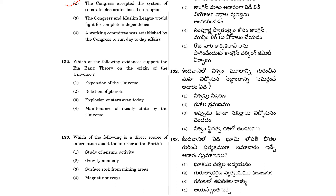Question 132: Which of the following evidences support the Big Bang Theory on the origin of the universe? The answer is the expansion of the universe. So 132, the answer is the expansion of the universe.